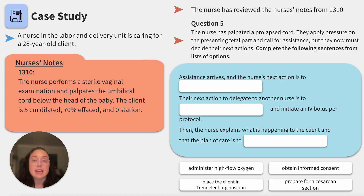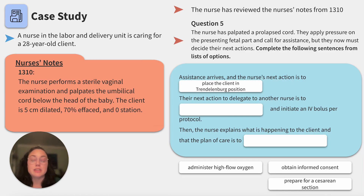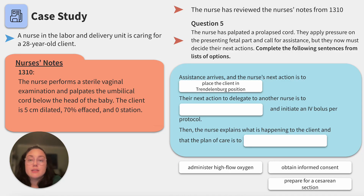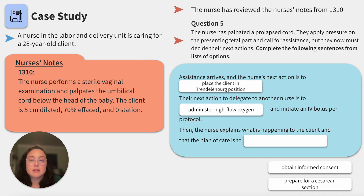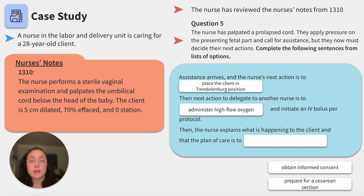Assistance arrives and the nurse's next action is to place the client in Trendelenburg position — supine with the head below heart level — to further reduce pressure on the umbilical cord during the emergency. It is all about making sure the cord is minimally compressed. The next action to delegate to another nurse is to administer high-flow oxygen and initiate an IV bolus per protocol. In labor and delivery we have two clients, so the purpose of high-flow oxygen is to get as much oxygen to the baby as possible, which is also why starting an IV bolus is the next step.